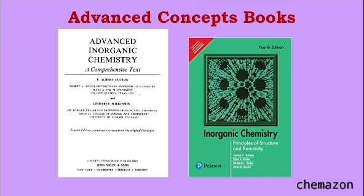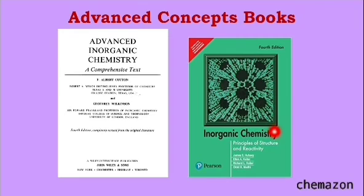Let us see some advanced concepts books. These two books are the most standard reference books: Advanced Inorganic Chemistry by F.A. Cotton and Geoffrey Wilkinson, and Inorganic Chemistry: Principles of Structure and Reactivity by James Huheey, Ellen Keller, and Richard Keller. These two are very standard reference books which most people would suggest you refer. They are very good for advanced concepts like organometallic chemistry, bio-inorganic chemistry, or coordination compounds.